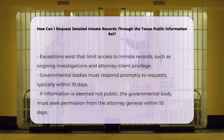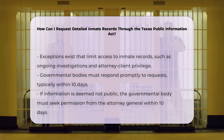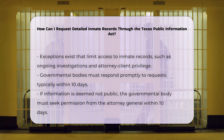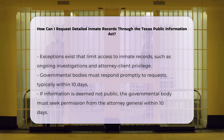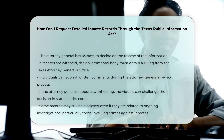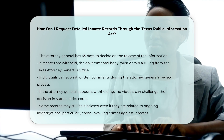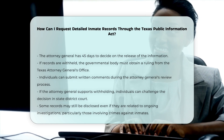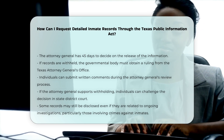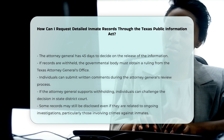Processing time: The governmental body is required to respond promptly. If they contend the information is not public, they must ask the Attorney General for permission to withhold the records within 10 days. The Attorney General then decides within 45 days whether the information should be released. If the governmental body fails to seek this decision in time, the information is presumed to be public. If they decide to withhold the information, they must seek a ruling from the Texas Attorney General's office. You can also offer written comments to the Attorney General during this process. If the Attorney General agrees with the governmental body, you can file a lawsuit in state district court to challenge the decision.